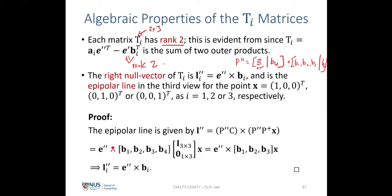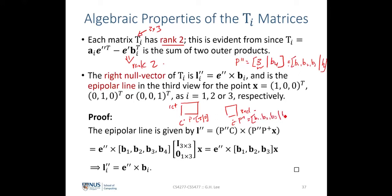Here is the proof of why this is true. Recall from the earlier lecture on fundamental matrix that the epipolar line is given by the projection of the camera center in the first image onto the third image. The first view has camera center C with projection matrix P = [I | 0], and the third view has camera center C'' with projection matrix P'' = [b1 b2 b3 | b4]. The epipole is the projection of the first camera center into the third view, given by P'' times C.